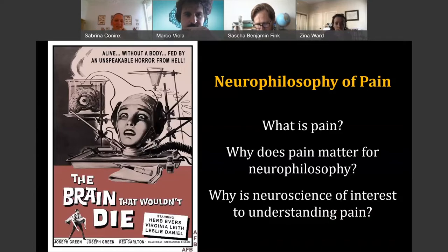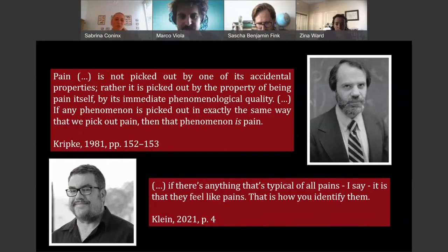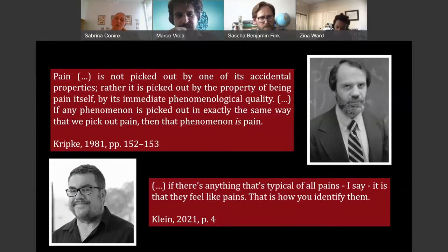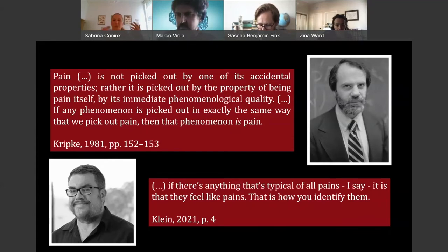Starting with the neurophilosophy of pain: what is pain, why does it matter for neurophilosophy, and why is neuroscience of interest for pain research? In the philosophy of pain, people normally start with Kripke, who said that pain is not picked out by one of its accidental properties — rather, it's picked out by the property of being pain itself, by its immediate phenomenological quality. If any phenomenon is picked out in exactly the same way that we pick out pain, then that phenomenon is pain. So pain is defined and identified by its phenomenal quality, by its phenomenal character.